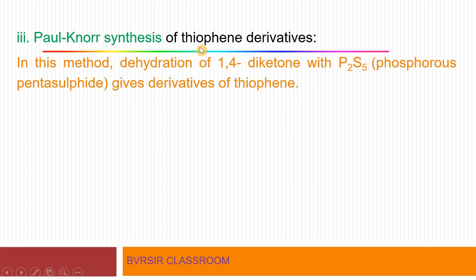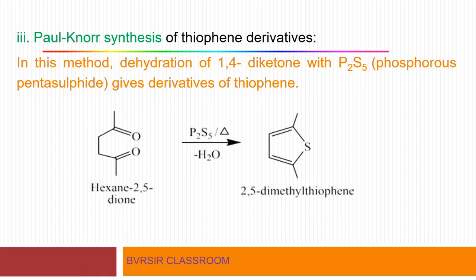Another well-known reaction is the Paal-Knorr synthesis of thiophene. In this synthesis, a 1,4-diketone is reacted with phosphorus pentasulfide (P₂S₅) to give a thiophene derivative. For example, hexane-2,5-dione reacted with phosphorus pentasulfide under suitable conditions gives 2,5-dimethylthiophene, a derivative of thiophene. This is another method for the preparation of thiophene.